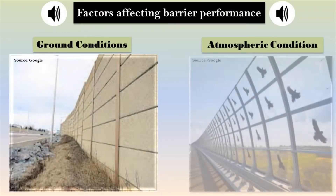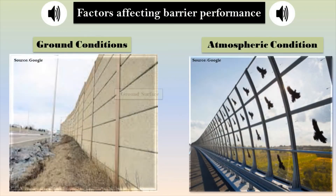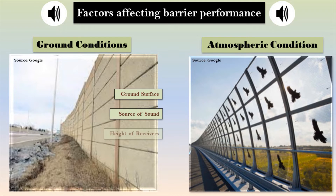Ground conditions and atmospheric conditions are the factors which affect barrier performance. Properties of the ground surface, source of sound, and height of receivers are included as ground effects. Wind velocity, turbulence, and temperature gradient are included in atmospheric conditions.